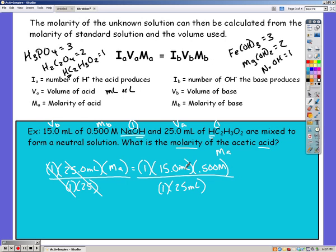Notice my milliliter units will cancel out and I'm going to be left with molarity, which is what I'm trying to find. The molarity of my acid must be 0.3 molarity.